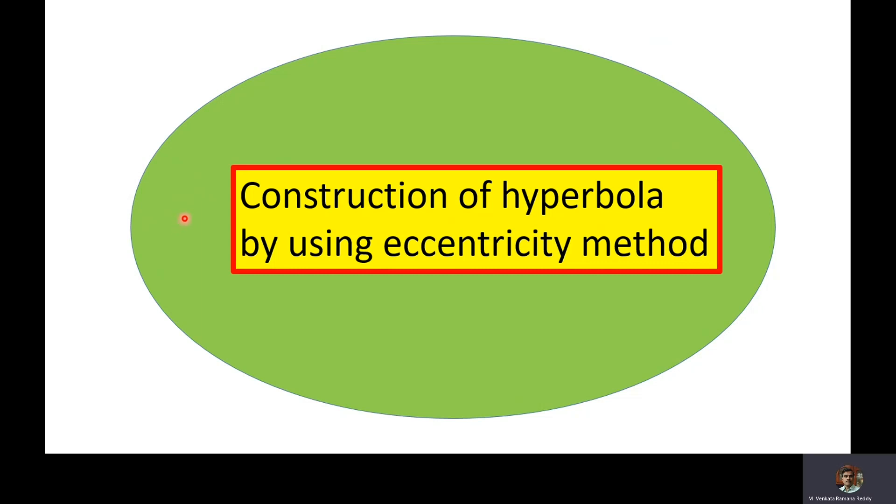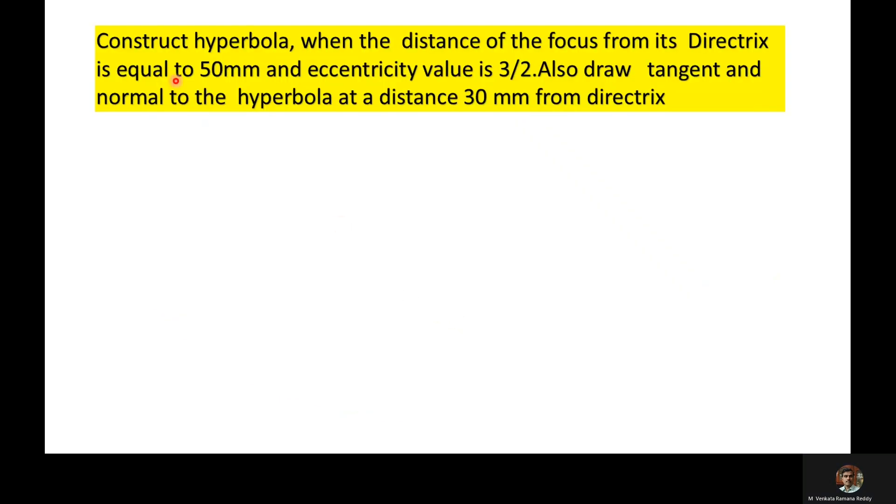Good morning my dear students. Welcome to the discussion of construction of hyperbola by using eccentricity method. What is the given problem? Construct hyperbola when the distance of the focus from its directrix is equal to 50 mm and eccentricity value is 3 by 2. Also draw tangent and normal to the hyperbola at a distance 30 mm from directrix.